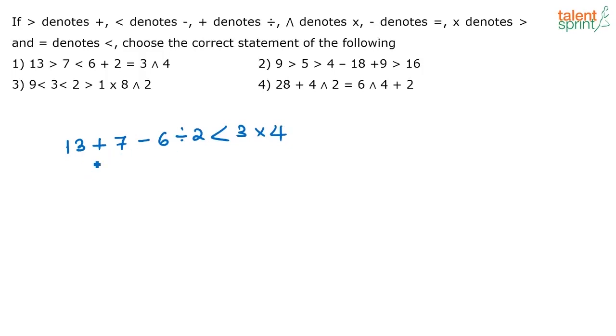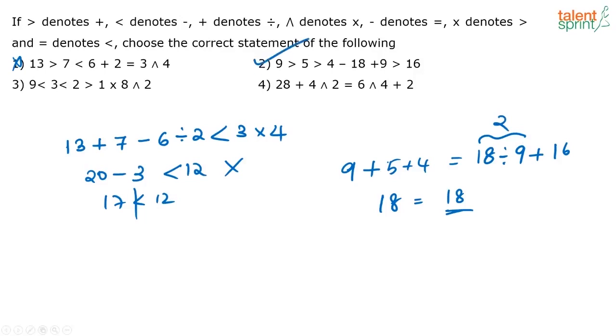So you have 13 plus 7 that is 20, 20 minus 3 that is 17 less than 12. Not possible, right? 17 is not less than 12. So first option does not follow. Similarly, now check the second option. What do you have? You have 9 plus, greater than is plus. 9 plus 5 plus 4 is equal to 18 divided by 9 plus 16. So this is nothing but 18 is equal to 18. Option 2 is your correct answer.